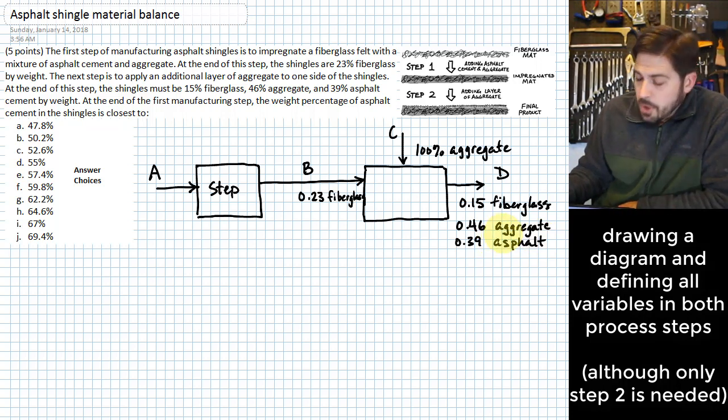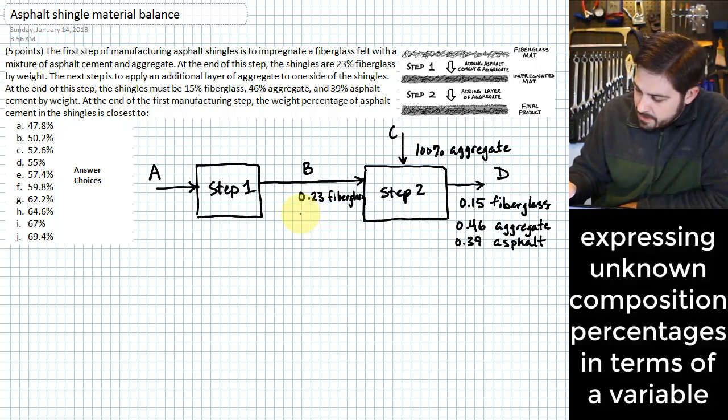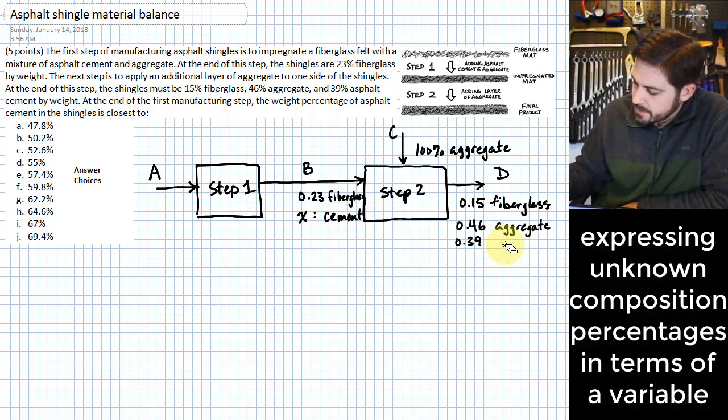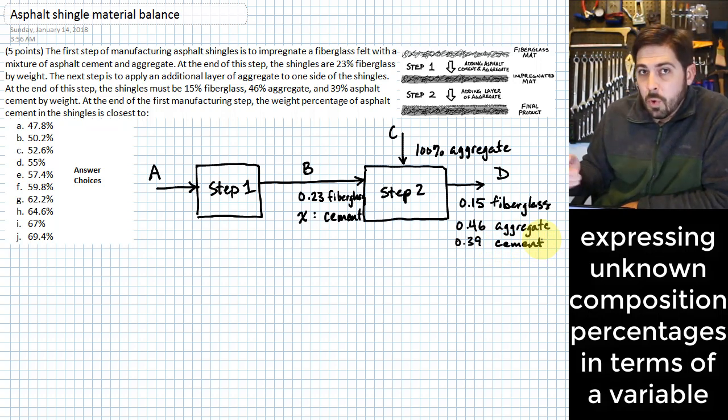There's a couple of the things that we don't know on this problem. We know that it's 23% fiberglass when it comes into step two of the process, but we don't actually know the other composition. And so what we're going to do is assign some variables to that. I'm going to assign this a variable of X. That is essentially the percentage that we have that is that asphalt cement. I'll just call it cement, make sure I'm consistent here. And we call that cement over here as well. It's basically the stuff that holds all this material together.